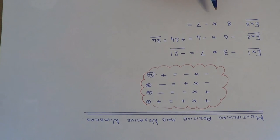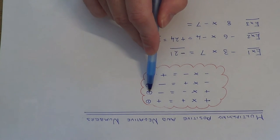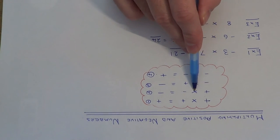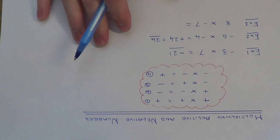And the final example, example three. We've got positive eight times negative seven, so we've got a positive times a negative. This is our second rule: positive times a negative gives a negative answer.